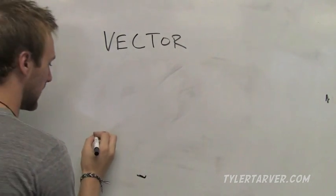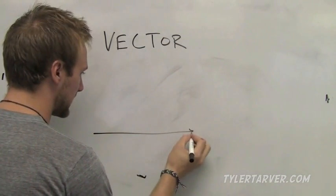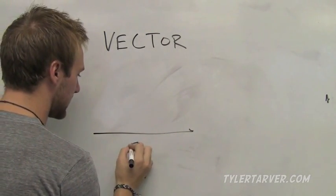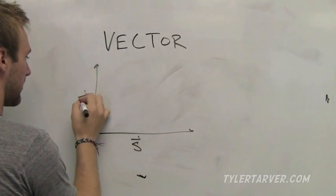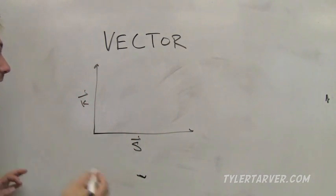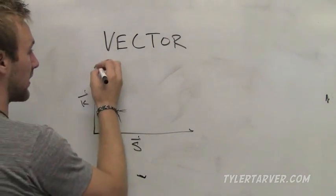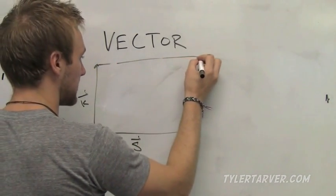The next one's called the parallelogram method. Say they go like this, like this. That's vector s. Let's say this one goes up here and that'll be vector k.